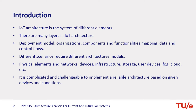Different scenarios require different architecture models. The physical elements and networks include devices, infrastructure, storage, user devices, fog, cloud, and some additional components. It is really complicated and challenging to implement a reliable architecture based on given devices and conditions.